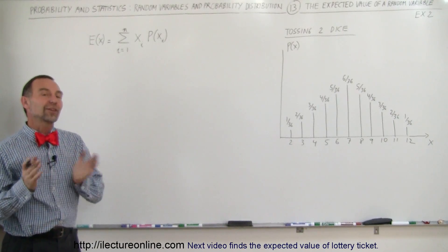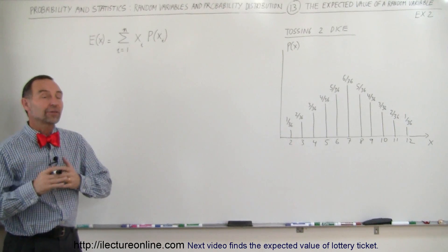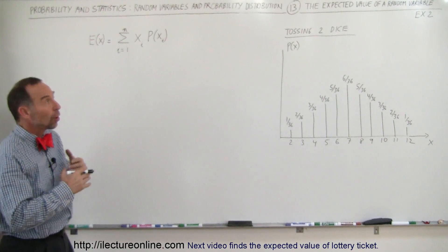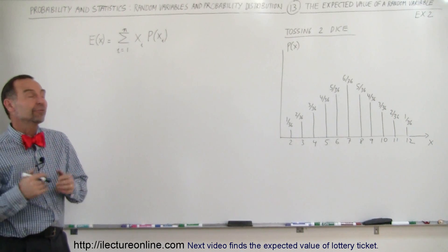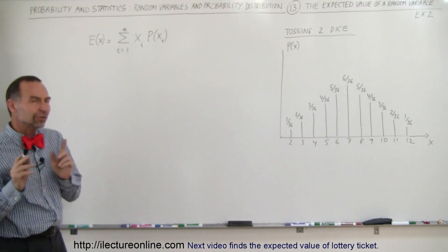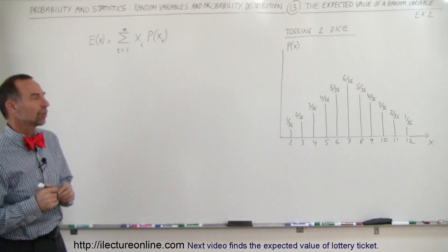Welcome to ElectronLine, and here's a second example of how to calculate what we call the expected value of a random variable. And here you'll see something interesting.